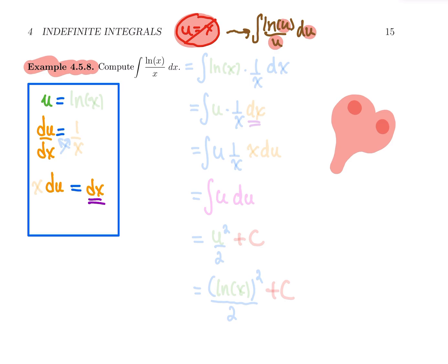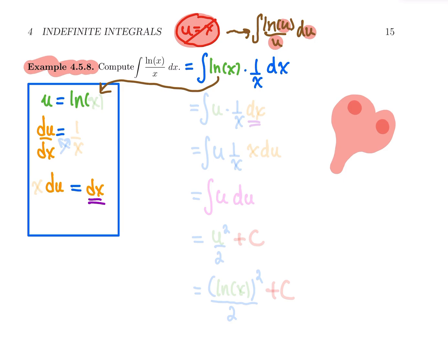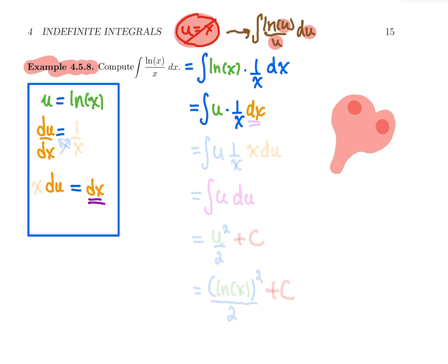The best way to see what's going on is to rewrite the integral: instead of ln x over x, write it as ln x times one over x. Now you might notice that the derivative of ln x is one over x — that's probably the correct substitution, and indeed it is. So choose u equal to ln x. The integral becomes the integral of u times one over x, dx. Going back in the box: the derivative of ln x is one over x, so cross-multiplying gives x du equals dx.